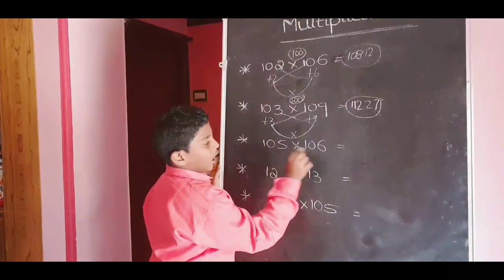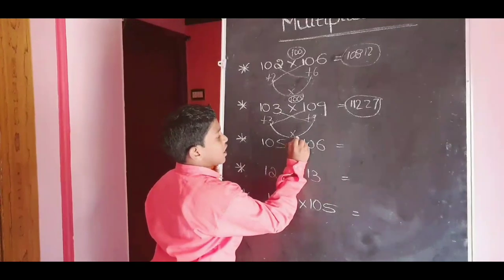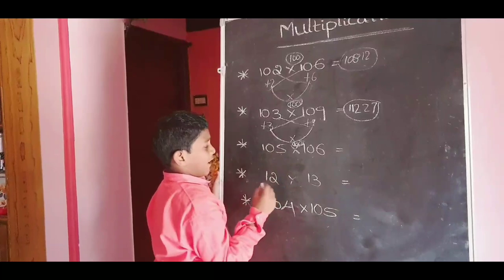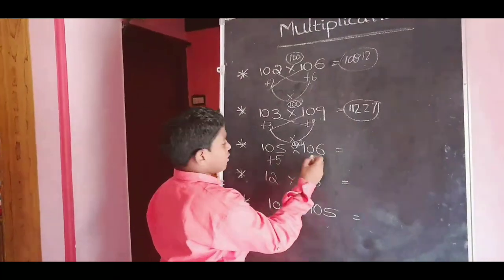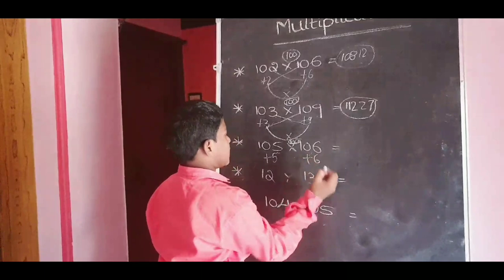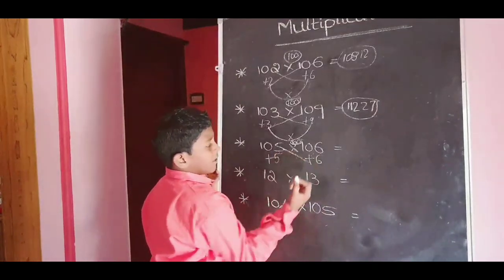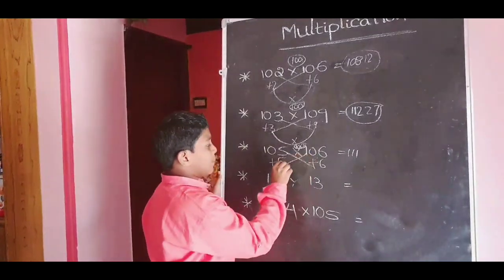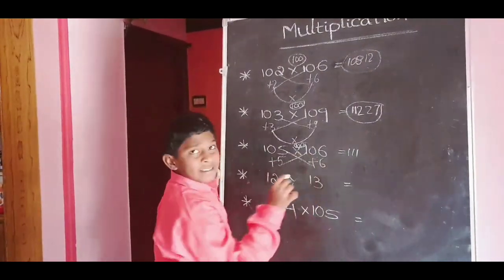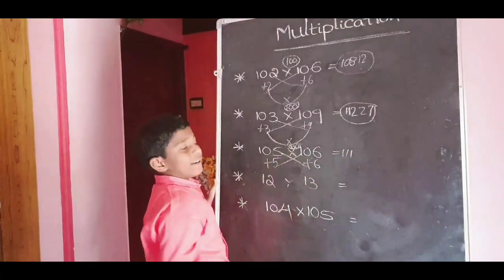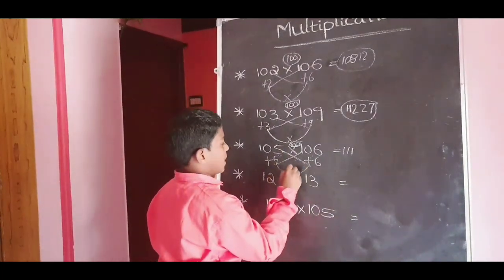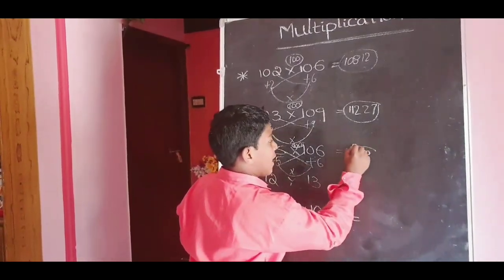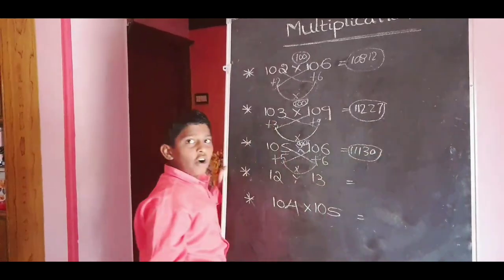Next: 105 into 106. This is nearest to 100. For 100, 105 plus 5; 106 plus 6. 105 plus 6 equals 111. 106 plus 5 equals 111. 5 plus 6 is 11, and 11 plus 100 equals 111. After, these two should multiply: 5 into 6. 5 into 6 are 30. The answer is 11130.